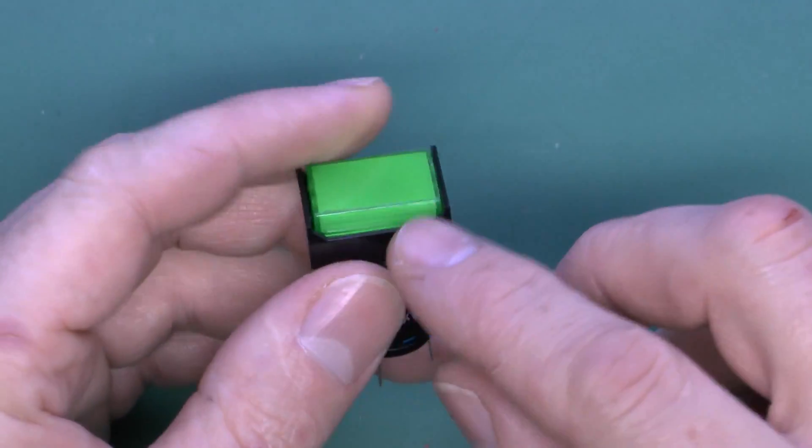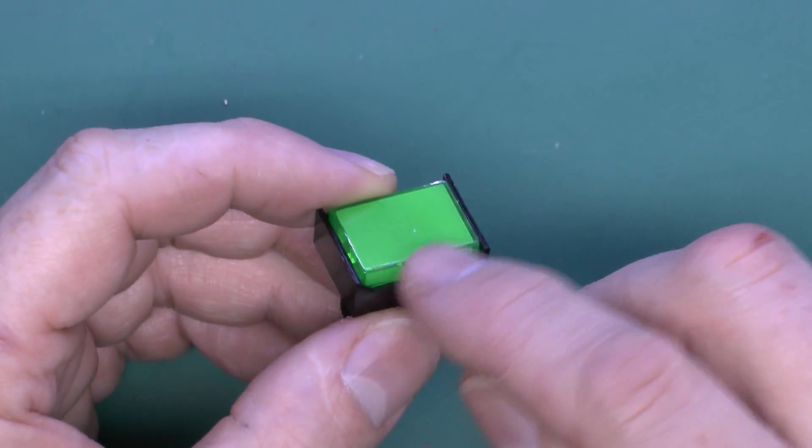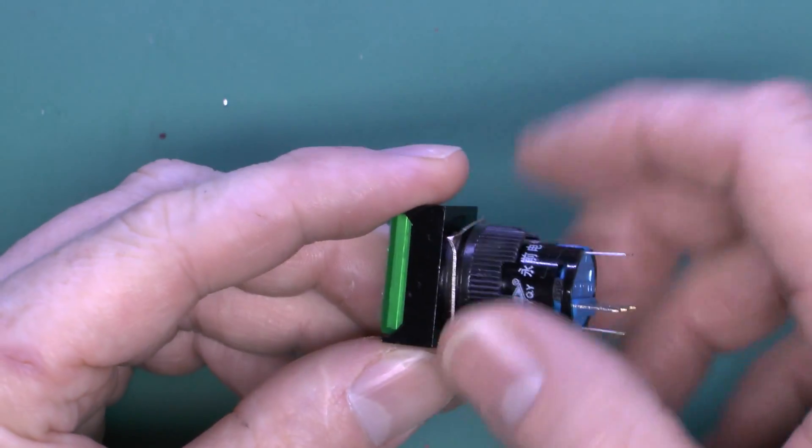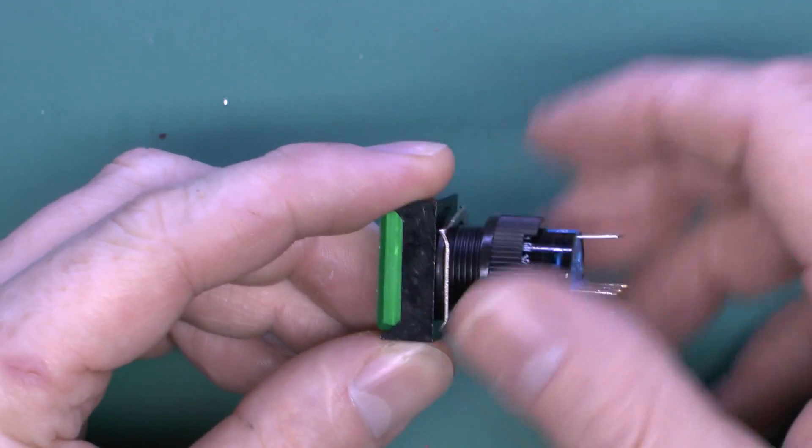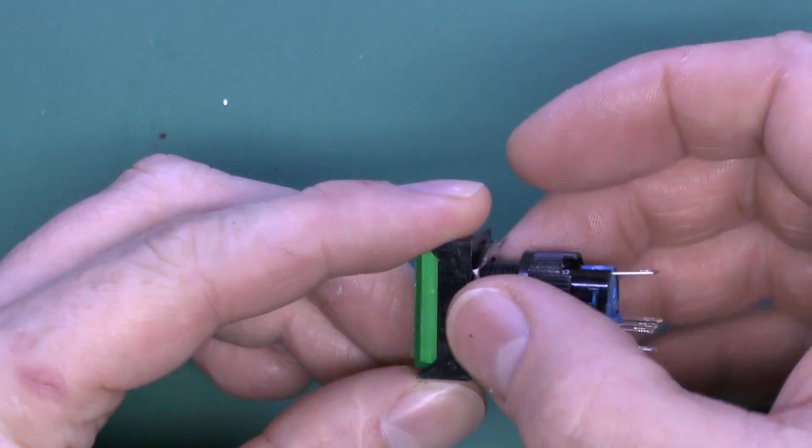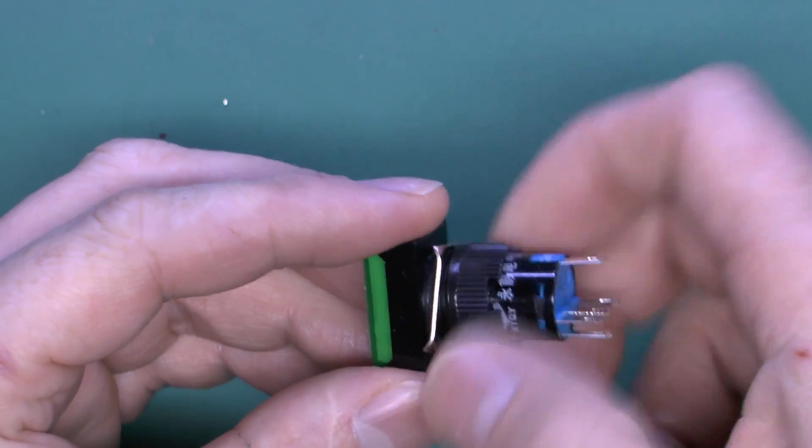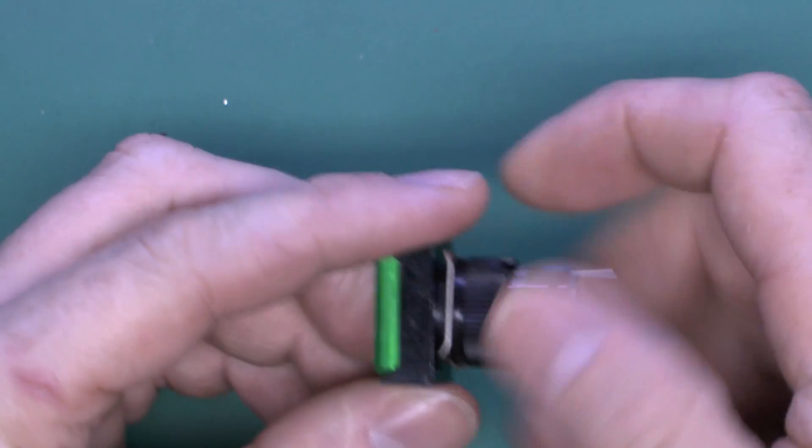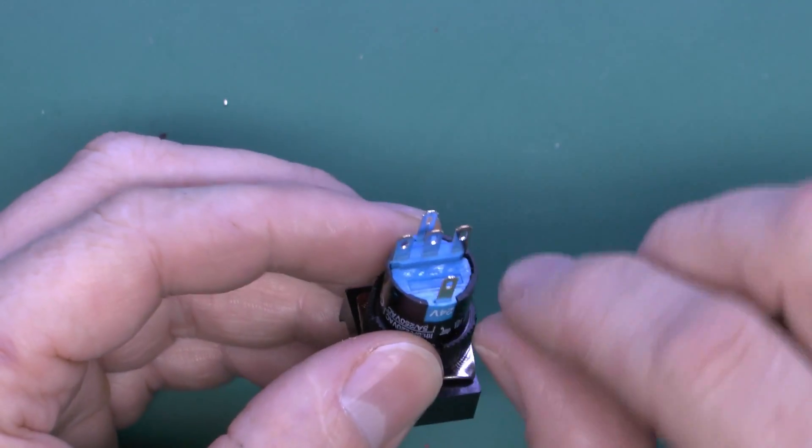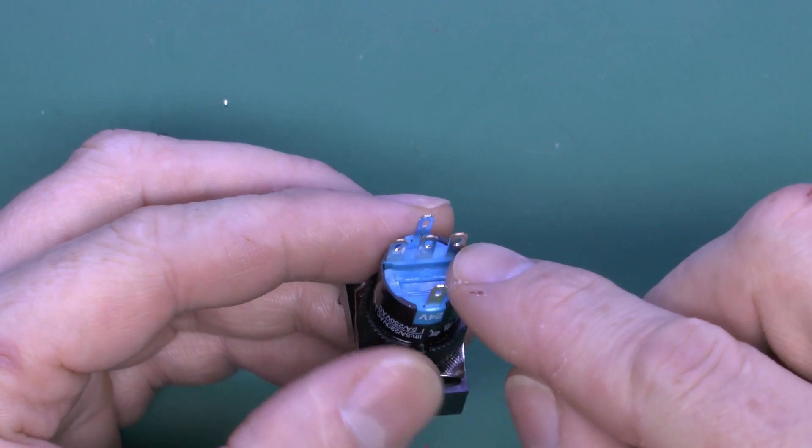So that's those. This has a green lens, but of course different colors are available. Designed for mounting in a panel, so this part unscrews and then your panel will go in the middle here, and then it just clamps on the back to secure it in position. These are illuminated, and on the back here we've got the terminals.